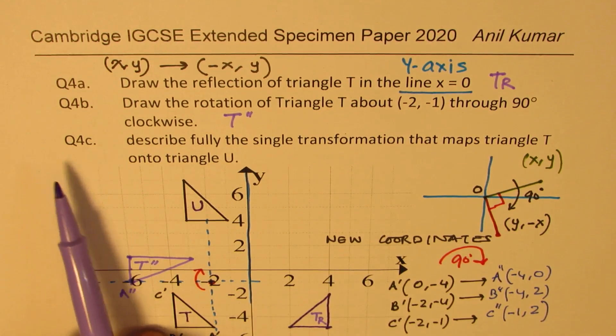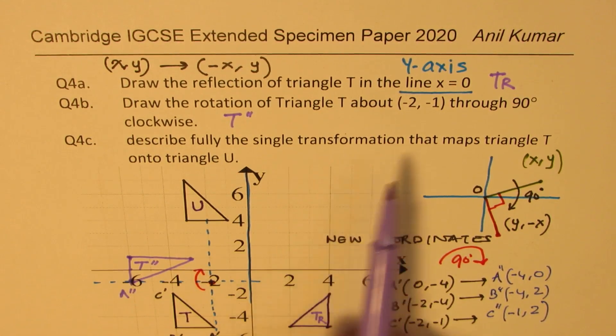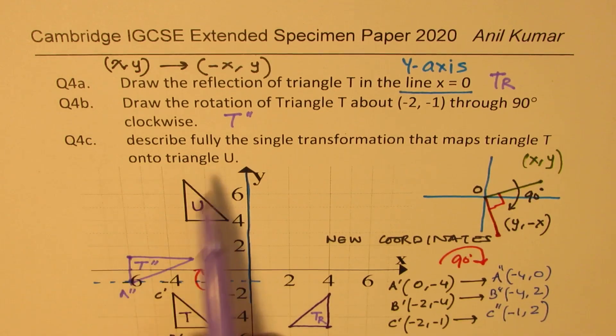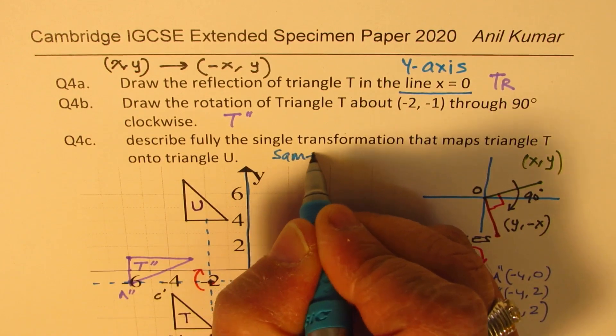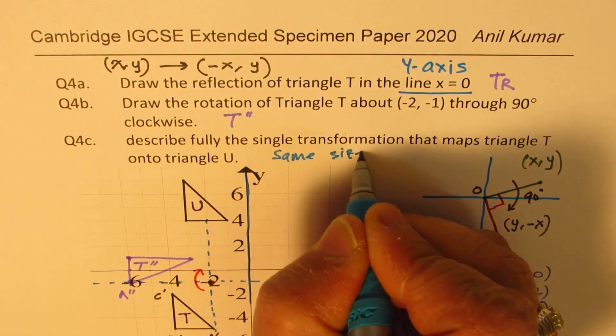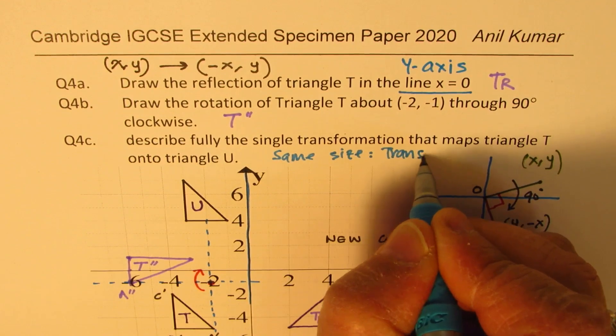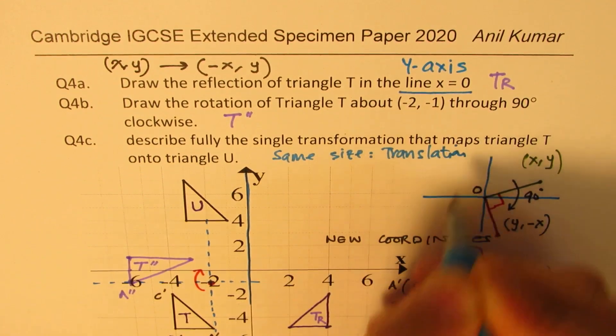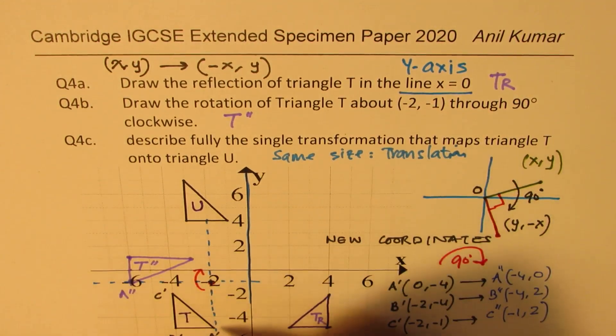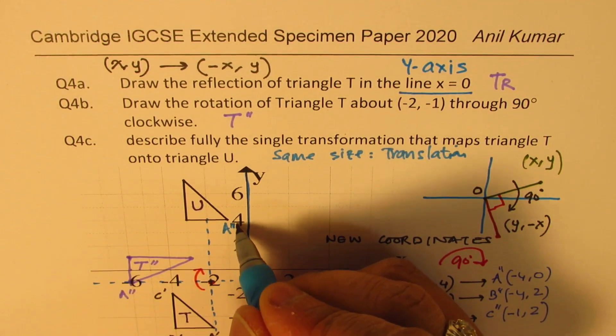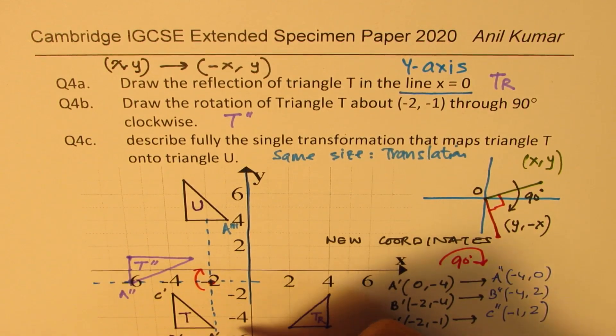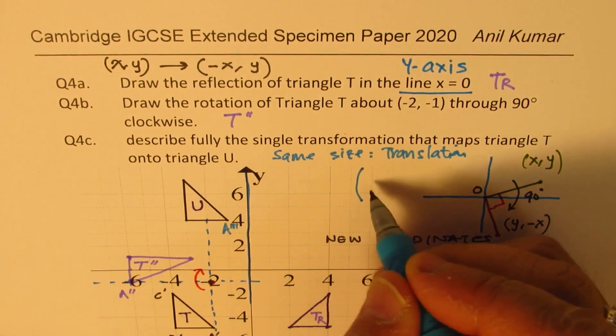Question number 4 says: describe fully the single transformation that maps triangle T onto U. So what is that single transformation? If you look at these two, we have the same size. That means it is basically translation. Now, what kind of translation is this? If you compare a point, let's say A dash, so this is A3 prime.